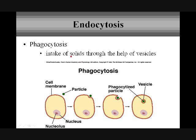Phagocytosis is the movement of solids in. A solid particle moves toward the cell membrane, the cell membrane dimples in, pinches in — vesicle. At this point it's going to join a lysosome, and that vesicle is going to join the lysosome so the lysosome can break down whatever this particular particle is once it's inside the cell.